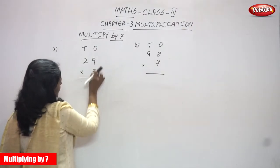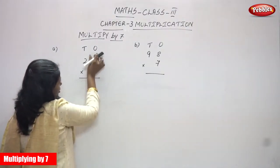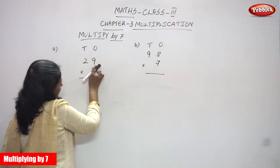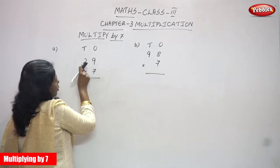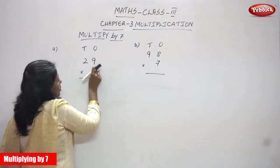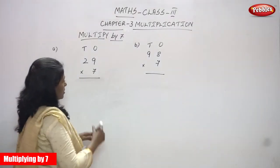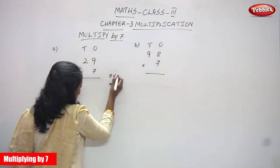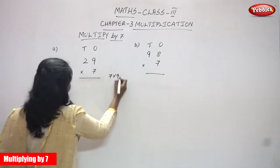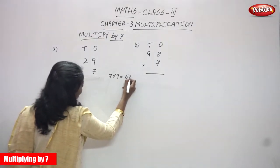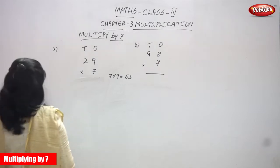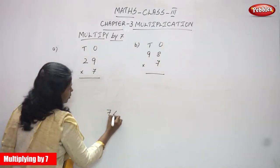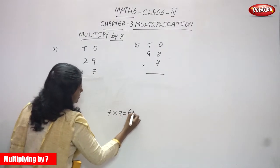The first sum we are going to see is 29 into 7. First we are going to multiply by the ones place. The ones number is 9, and the tens place value is 2. So 7 is going to multiply by 9. 7 into 9 — that means 63.